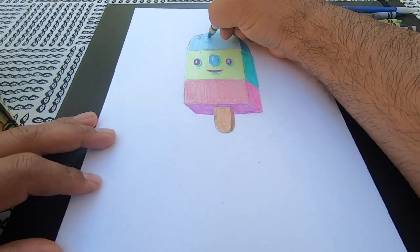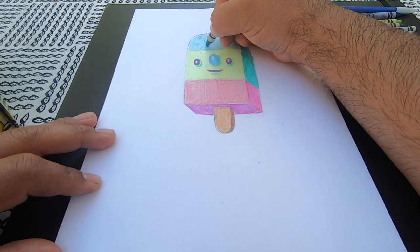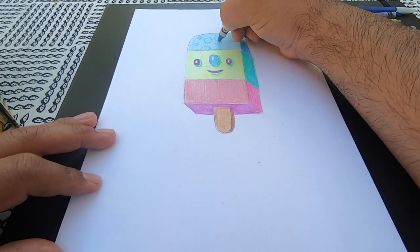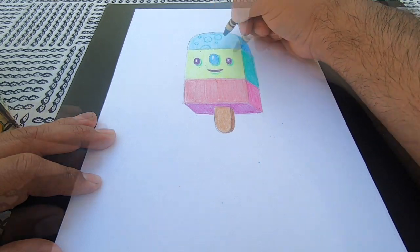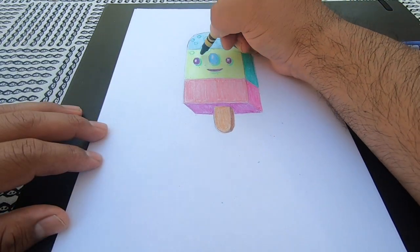Para agregar algunos tonos oscuros, regreso y agrego algunos colores más oscuros sobre los colores claros ya presentes en el dibujo. Luego empiezo a agregar unos círculos para darle más contraste al dibujo.